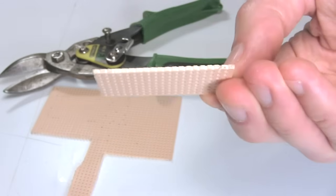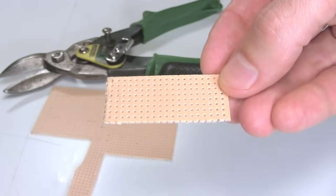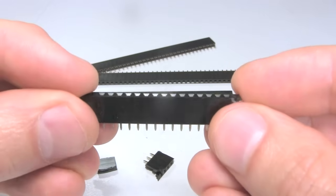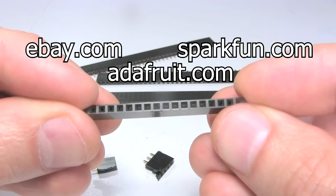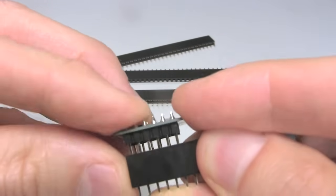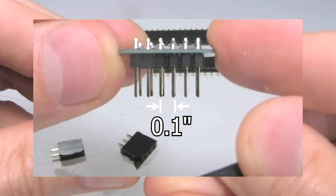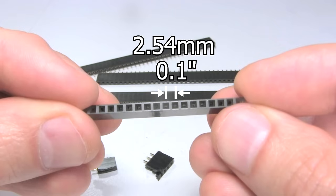I'll use this perfboard to put it all on. There are many variations of perfboard. These are the female pin headers I'll use. Again, you can buy them online from places like eBay, Adafruit, SparkFun, and others. And again, make sure you get ones with the correct distance from hole to hole. This board needs 0.1 inch, or 2.54 millimeters. So that's what these headers are.